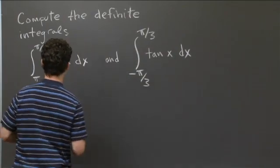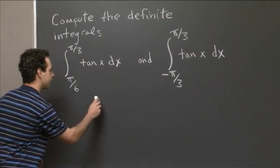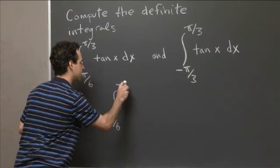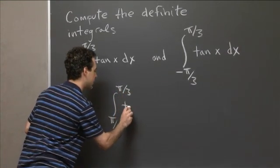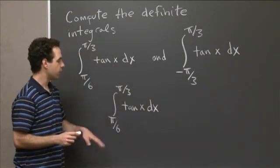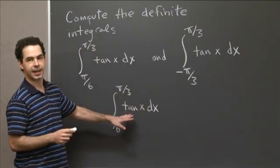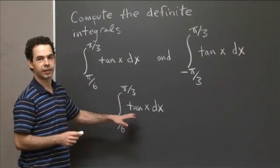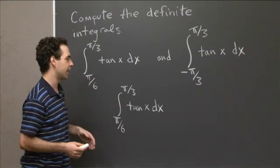So in particular, let's do this first integral first. So we have the integral from pi over 6 to pi over 3 of tan x dx. Well, so we know what the antiderivative of tan x is. We did that in an earlier recitation. So that's ln of cosine x, or ln of the absolute value of cosine x.